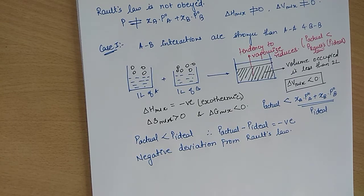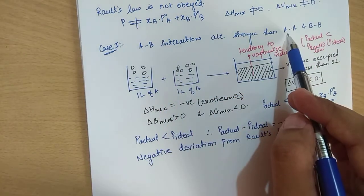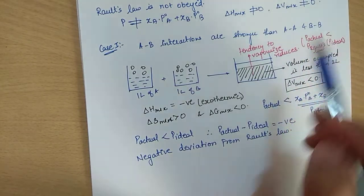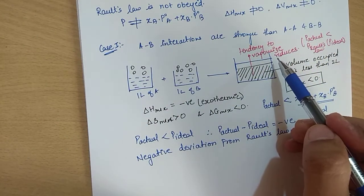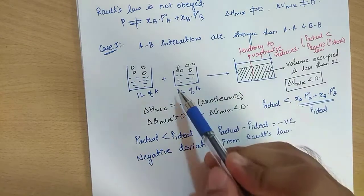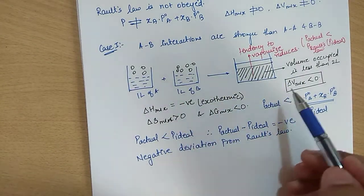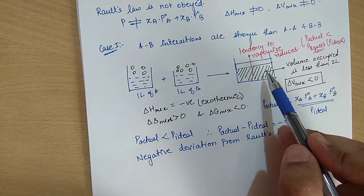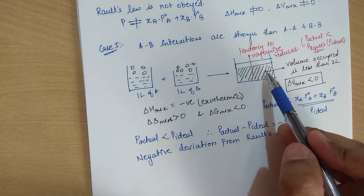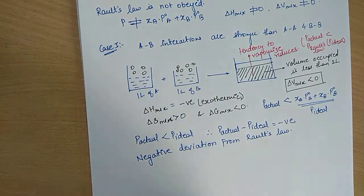To summarize negative deviation: A-B interactions are stronger than A-A and B-B interactions, so tendency to vaporize reduces. Delta H of mixing is negative, delta V of mixing is negative, actual volume is less than ideal volume, and delta G of mixing is also less than zero.